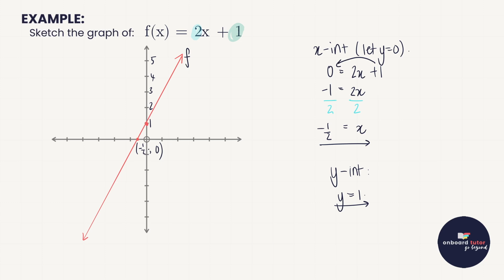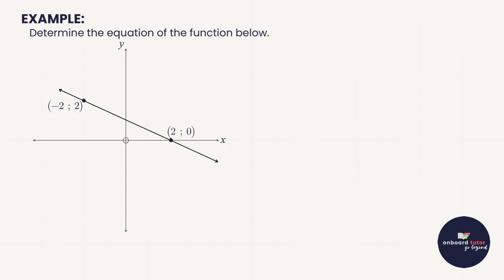Now we're given a straight line with two points on it. Worth noting: one point is an x-intercept because y = 0. If we're asked to determine the equation of a function, the important first step is always to write down the standard form — y = mx + c for a straight line. We know something about m (the gradient) and something about c (the y-intercept), so we work those out.